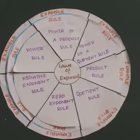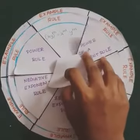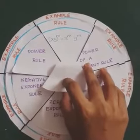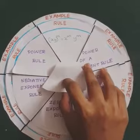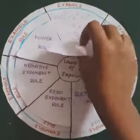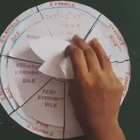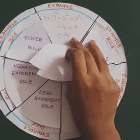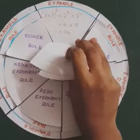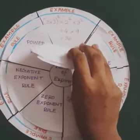The first law is the power of product rule. Its rule is: (xy)^m = x^m × y^m. An example is (2 × 3)^2 = 2^2 × 3^2 = 4 × 9 = 36.